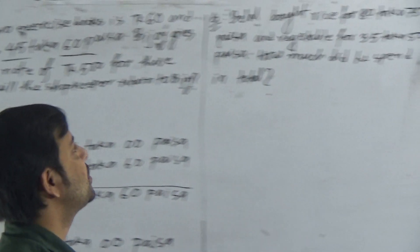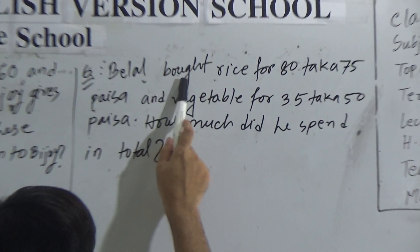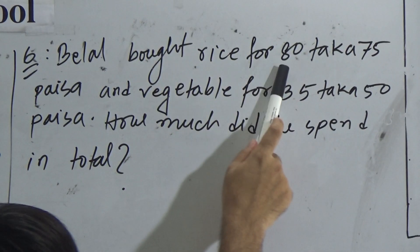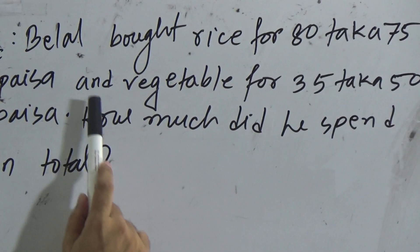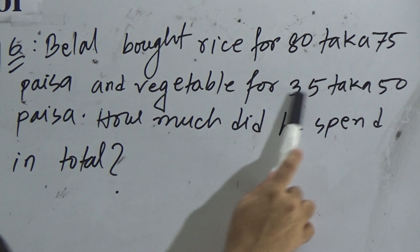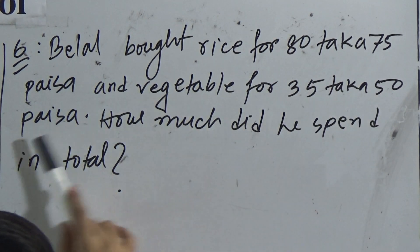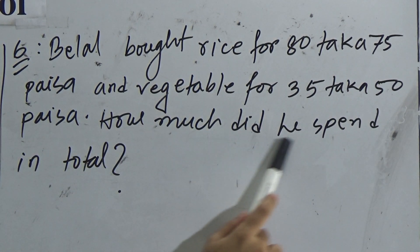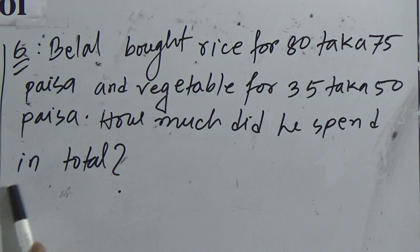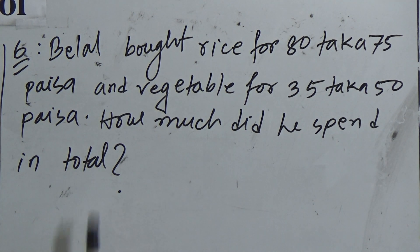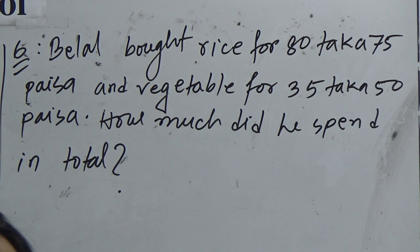Now I will go to the next question. Our next question is Question 6. Belal bought rice for 80 taka 75 paisa and vegetable for 35 taka 50 paisa. How much did he spend in total? In total means we just have to add the price of rice and vegetable to get the required answer. So we can write: Solution.